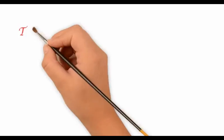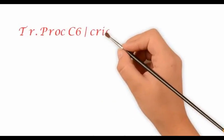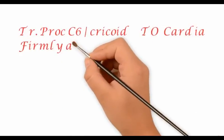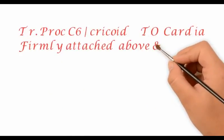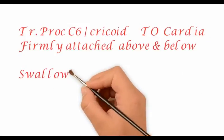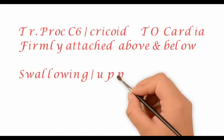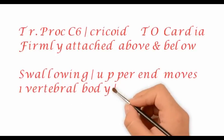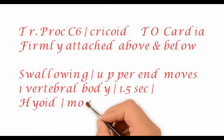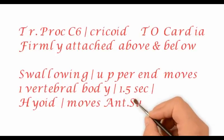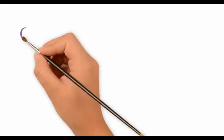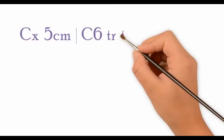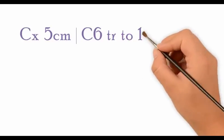The upper extent of the esophagus is the cricoid cartilage or the transverse process of the C6 vertebra; the lower limit is the cardia. During swallowing, the hyoid bone moves a distance of one vertebral body anterosuperiorly over 1.5 seconds to open the retrolaryngeal space.